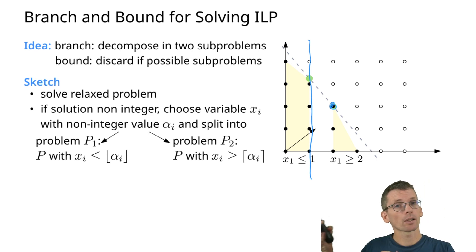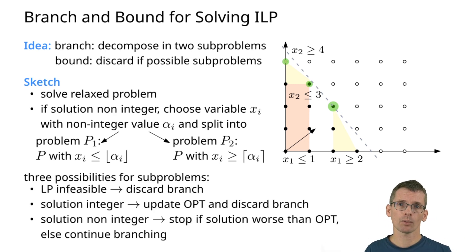For the larger or equal two, I get an integer solution. Then for that subproblem I'm done. I can update the opt to being this value and now just need to see whether the other subproblem gives me a better opt. So here, let's say this is now the solution that I get from the LP. It's again not integer. Then in this case I can subdivide based on x_2. So I'm going to solve the problem x_2 smaller or equal in this case 3 and larger or equal 4, and I will get solutions that are worse than the solution that I already found. And then I am done. Generally, while branching, I have three possibilities for the subproblems: either I end up with an infeasible LP, then I can simply discard the branch, or I get an integer solution, then I update the opt and I'm also done with the branch, or I get a solution that is non-integer. Then I stop if the solution that I have is worse than the opt that I already found, otherwise I need to branch.